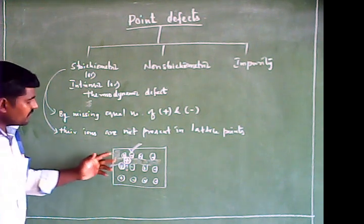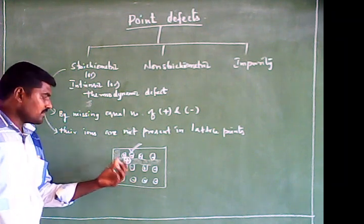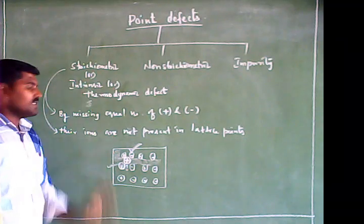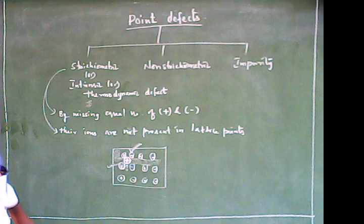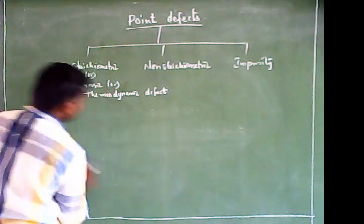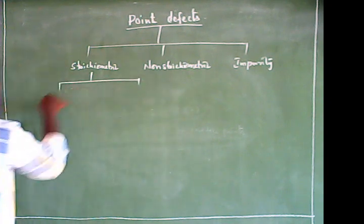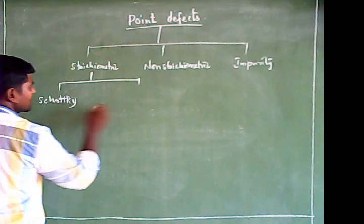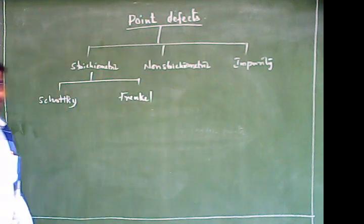Since equal numbers of positive and negative ions are involved, there is a balance, so it is called stoichiometric defects. There are two types of stoichiometric defects: Schottky defects and Frenkel defects.